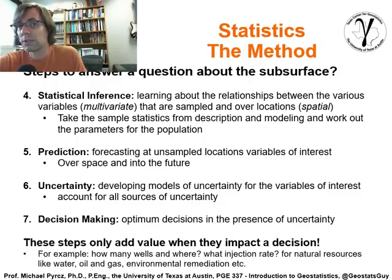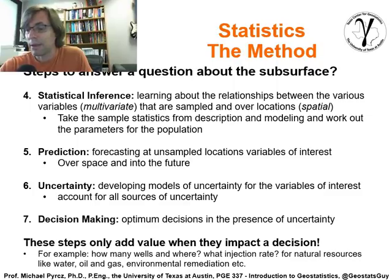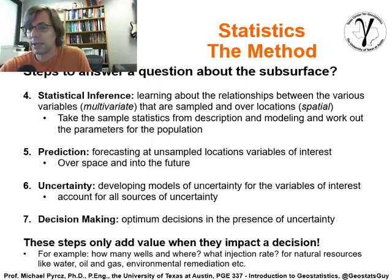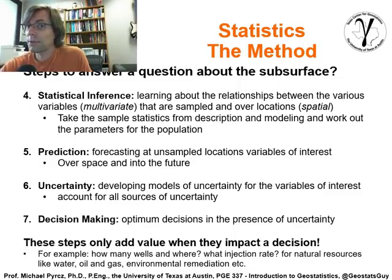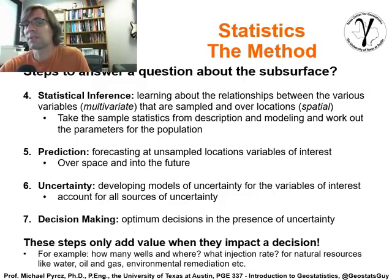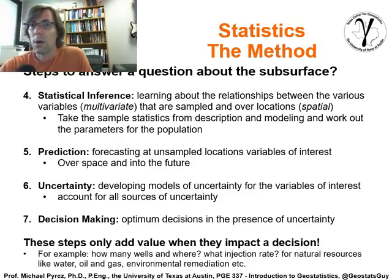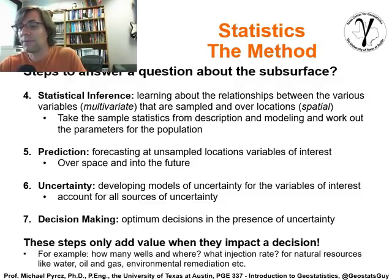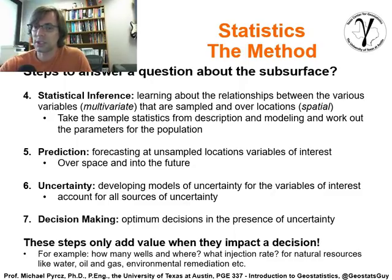There's spatial uncertainty, model parameter uncertainty, and sampling uncertainty in the measurements we collect, and we have to combine all of these together. Step seven is taking that uncertainty model and making decisions — optimum decisions in the presence of uncertainty. With some type of criteria we're trying to maximize, like net present value or flow rates, we pick the development decision that maximizes that result in the presence of uncertainty, generally represented by multiple realizations of the subsurface.